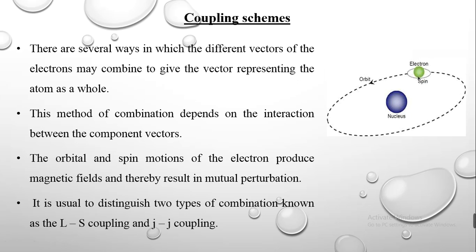First, let me discuss the coupling scheme. We know that the atom consists of a nucleus, and around the nucleus the electrons will be orbiting in different orbits. The electrons will be having orbital motion as well as spin motion. According to the vector atom model, these motions are treated as vectors — the orbital motion is represented by L and the spin motion is represented by S.